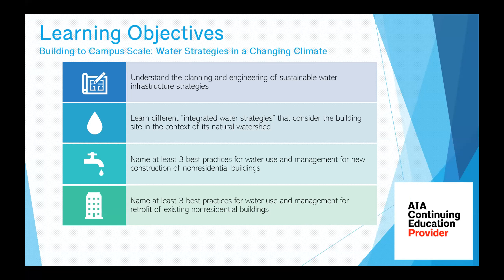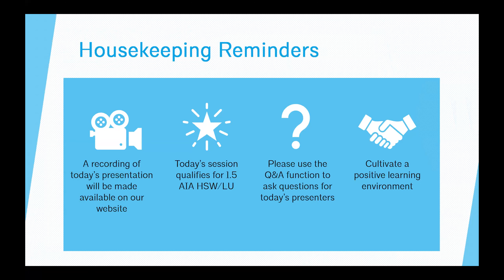AIA California provides the learning objectives for every webinar, included in the PDF presentation available online. Today's session is being recorded and will be posted on the AIA California website at www.aiacalifornia.org along with additional resources. Today's session qualifies for 1.5 AIA HSW learning units. For those who watch live, AIA California staff will report these units for you, though it can take several weeks before credits post to your AIA transcript. Please use the Q&A function to ask questions.